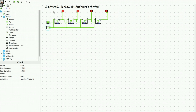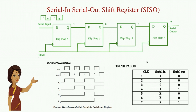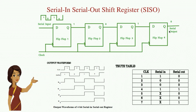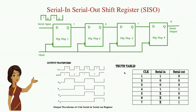This is the serial in parallel out shift register. Next we talk about a serial in serial out shift register, where data is shifted serially in and out of the register one bit at a time, either in left or right direction, under clock control. We will implement this diagram using Logisim software and verify the truth table.